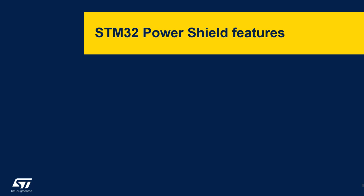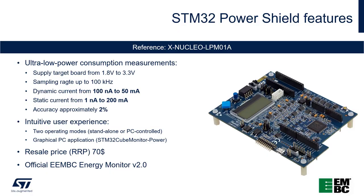STM32 Power Shield can supply the target from 1.8V up to 3.3V. It can sample the current at 1 kHz frequency, which allows measuring even transient behavior such as low power entry or load switching. The dynamic range starts from 100 nA and ends at 50 mA, which allows accurately measuring all the low power modes of STM32 products. It has been chosen as an official EEMBC energy monitor for benchmarking.